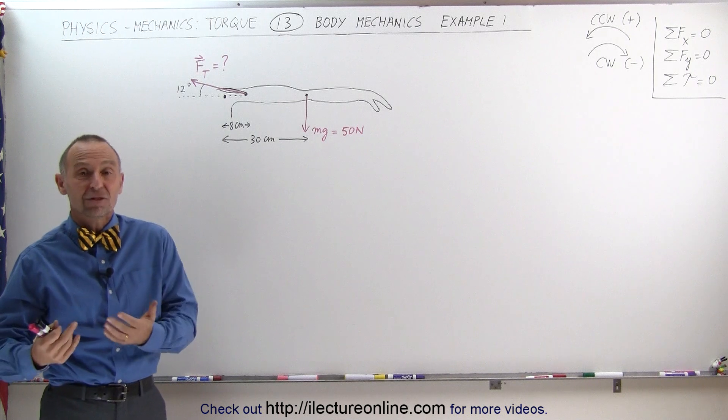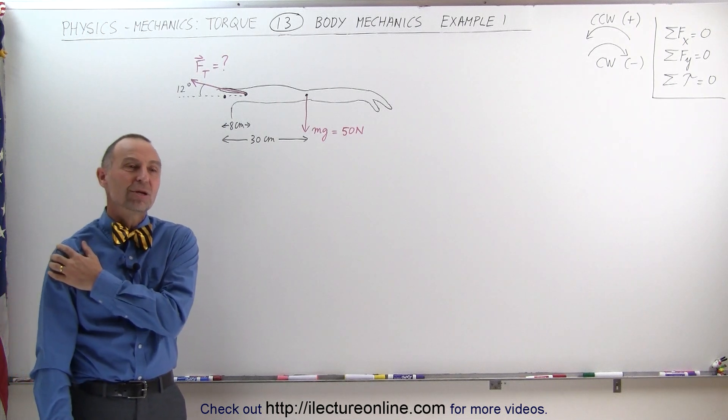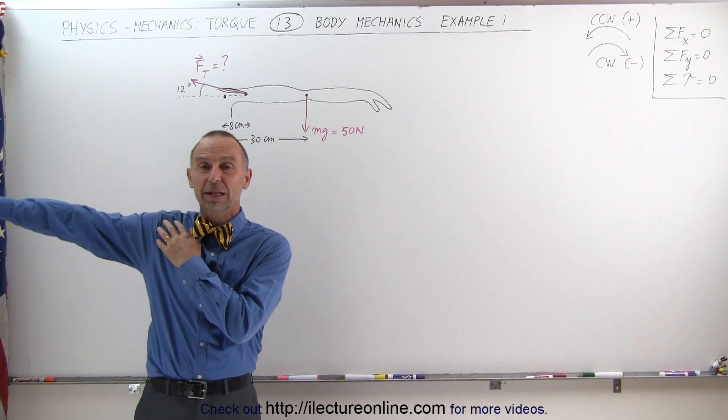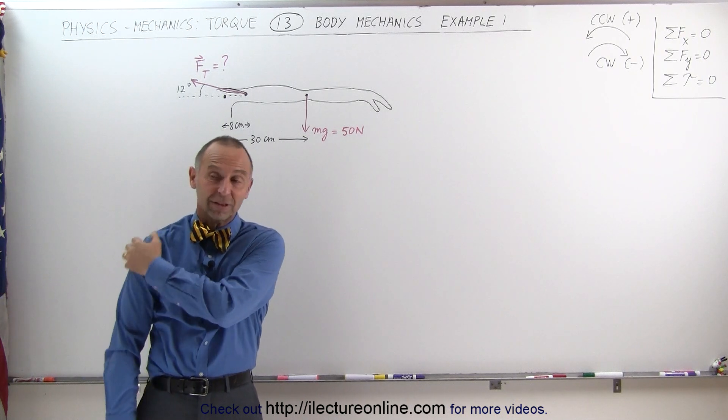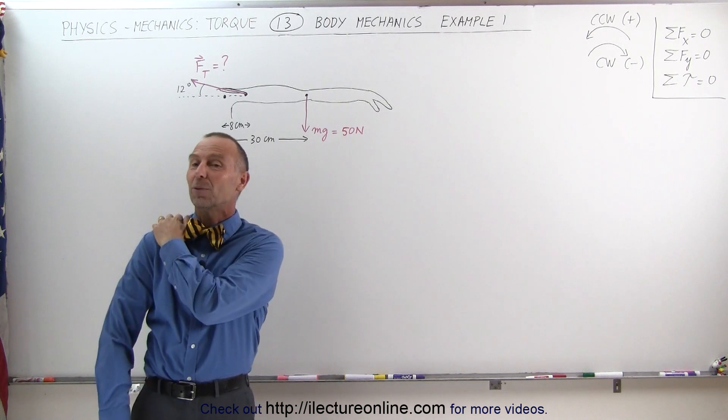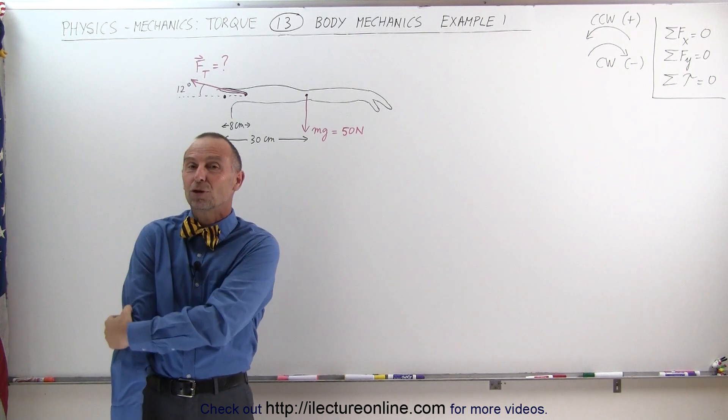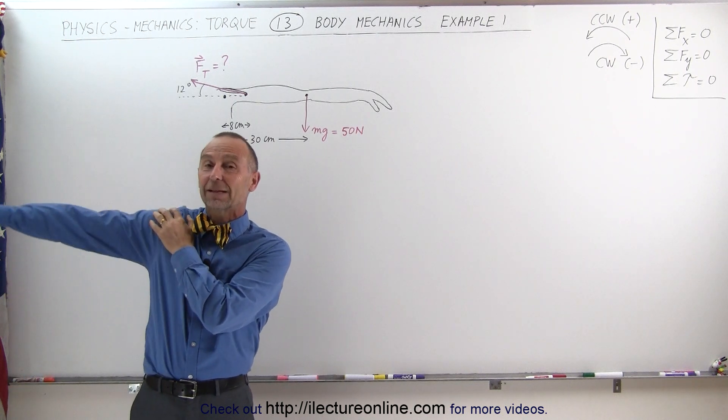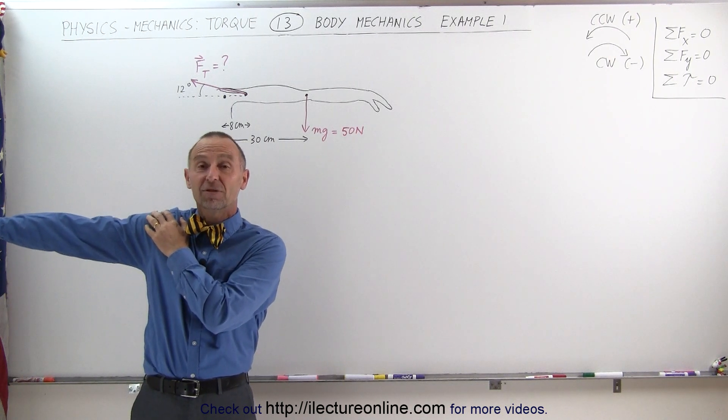For example, how much tension does the tricep need to apply in order to take your arm and lift it up into a horizontal position? The only muscle that can do that is the muscle that's attached to your skeleton right here in your arm. It would be the tricep that's connected to the humerus in the upper arm, and that's the muscle that can pull your arm up into a horizontal position.